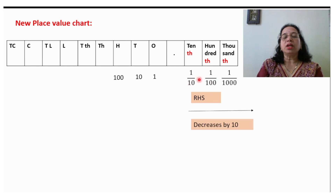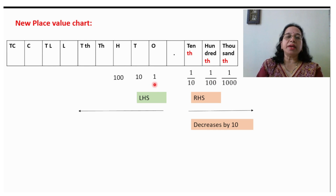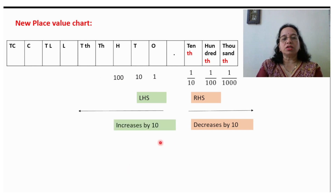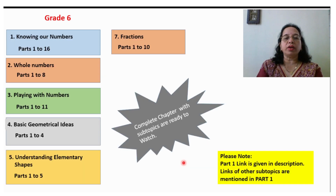On the left hand side of the decimal, numbers are increasing by 10: 1 into 10 is 10, 10 into 10 is 100, 100 into 10 is 1000. So numbers increase by 10. This concept is very useful for fill in the blanks and true and false questions.